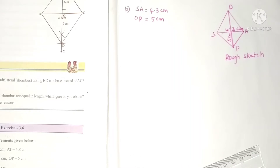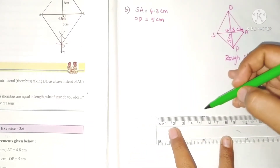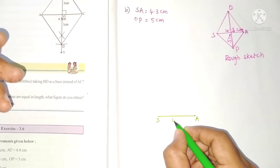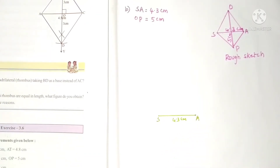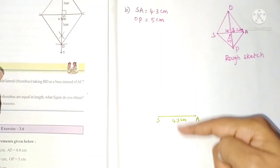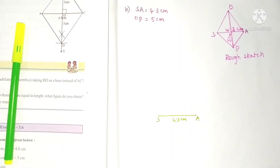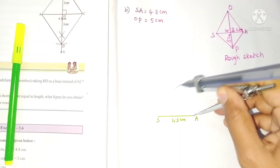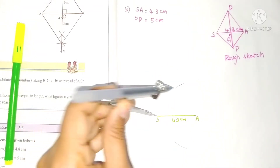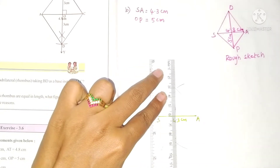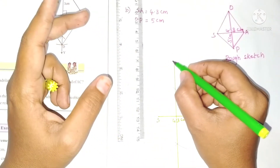First, draw a line segment SA of 4.3 centimeters. Since the diagonals are perpendicular bisectors of each other in a rhombus, we have to draw a perpendicular bisector first. Take the compass with radius more than half and draw arcs on both sides, then join these two arcs.